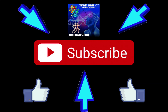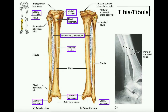Welcome back to Catalyst University. My name is Kevin Tokoth. Please make sure to like this video and subscribe to my channel for future videos and notifications. In this video, we're going to discuss two major things: first, we're going to look at and identify the major bony features of both the tibia and the fibula, and second, we're going to look at determining how you know if the tibia is the left or the right tibia.